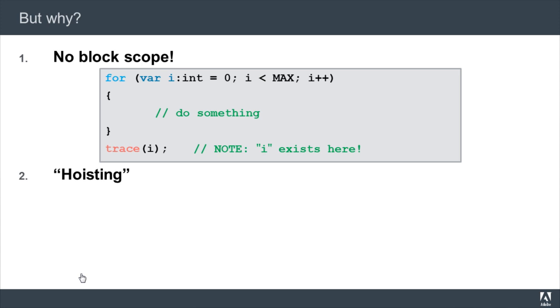Let's take a look at another example. In this code snippet, you will immediately see a trace statement for a variable number, but that variable isn't declared yet. It is actually declared in the for loop on the next line. But through the magic of hoisting, that variable actually does exist at the time of that trace statement.